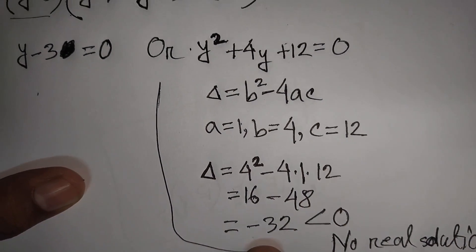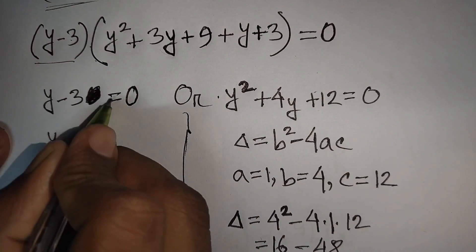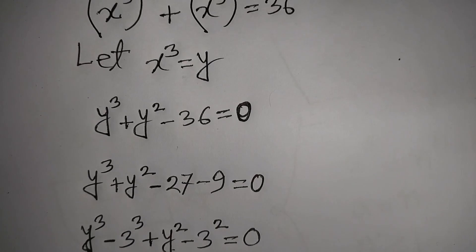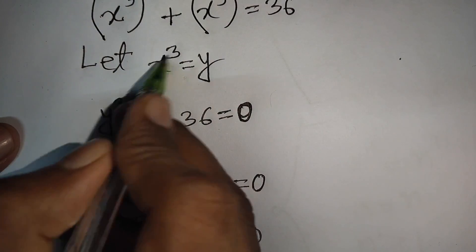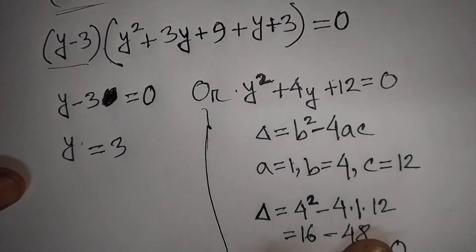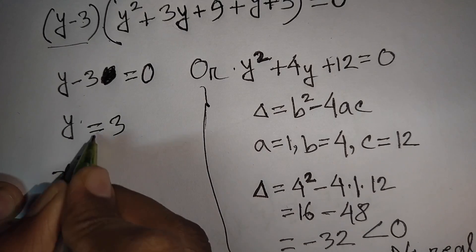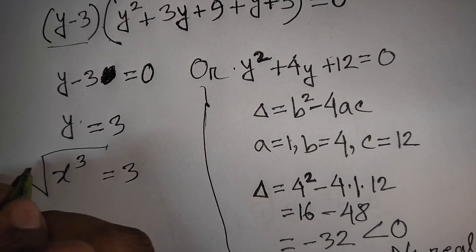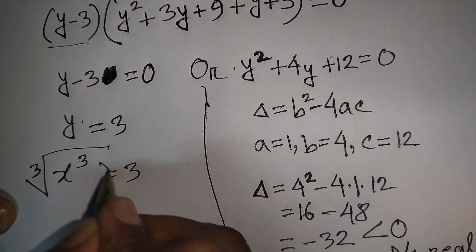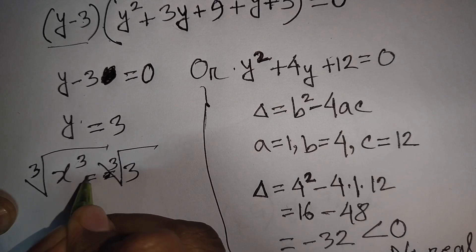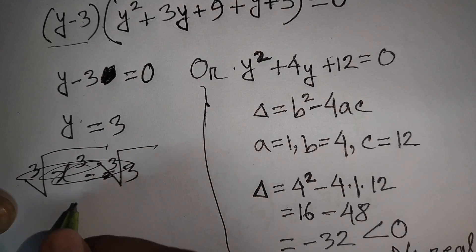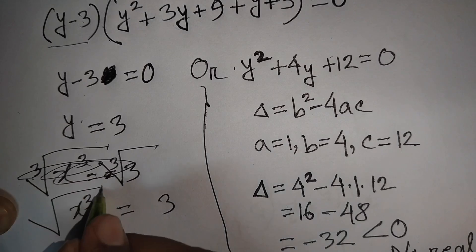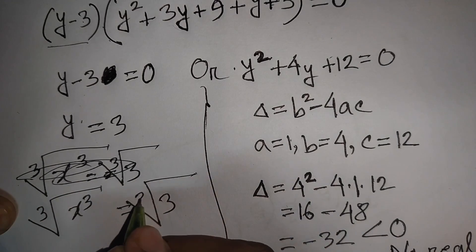From y - 3 = 0, we get y = 3. Remembering that y = x³, we have x³ = 3. To find x, we apply the cube root to both sides: cube root of x³ equals cube root of 3.